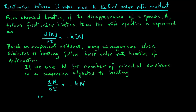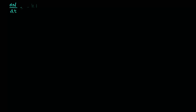Let's integrate this equation and see if we can develop a relationship with the D value. We have dN over dt equals minus K times N. We will first separate the variables to solve this differential equation — the variables are time and the number of microorganisms — giving dN over N equals minus K times dt.